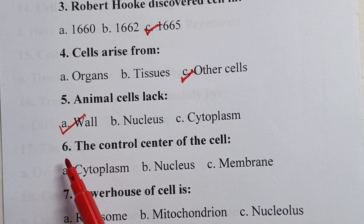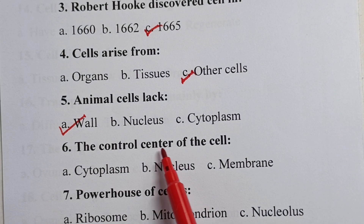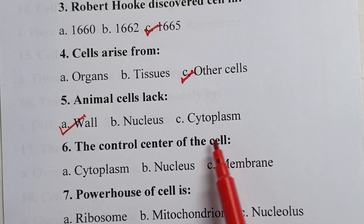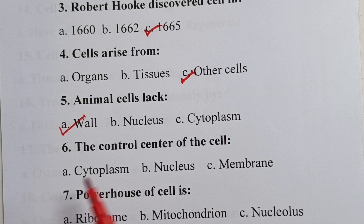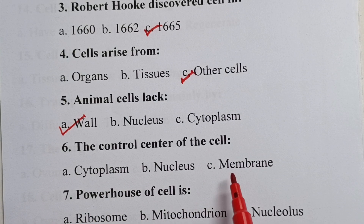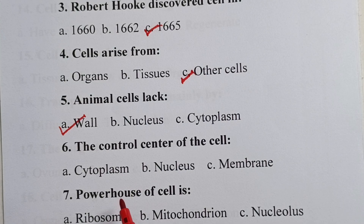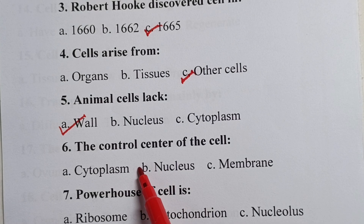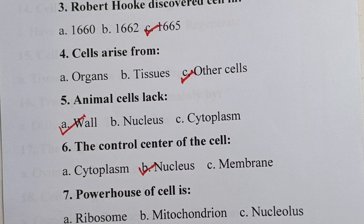Question six: the control center of the cell is — is it cytoplasm, nucleus, or membrane? Your answer is nucleus. So, the nucleus is also known as the control center of the cell.